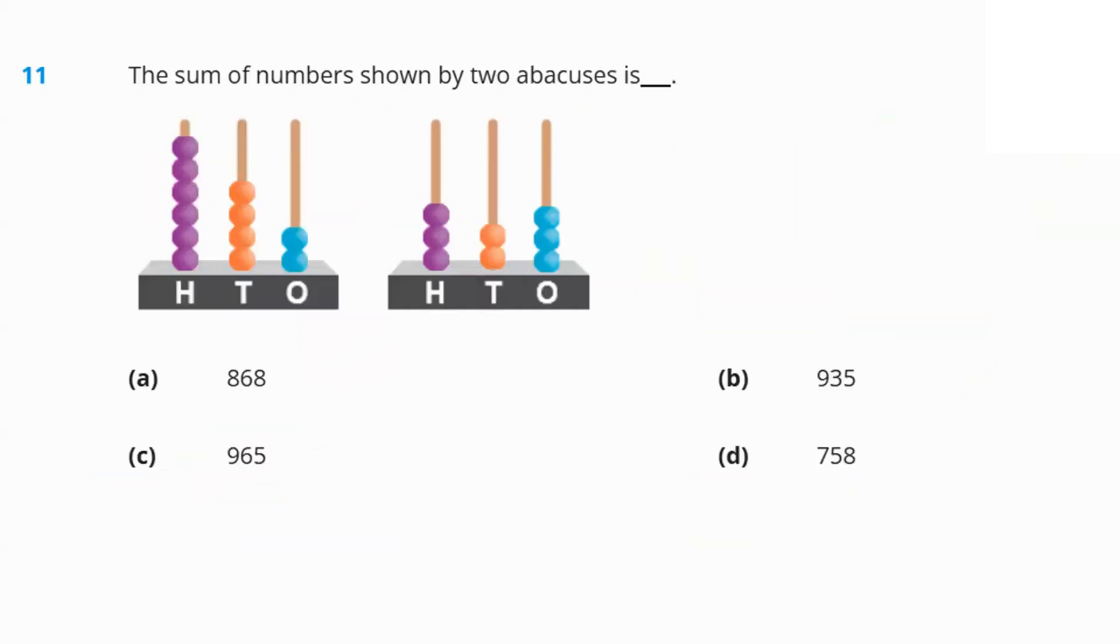Question number 11. Find the sum of the two numbers shown on both the abacuses. One, two, three, four, five, and six. Six hundred forty-two. Plus, six hundred and forty-two plus three hundred and twenty-three. If you add this, three plus two, five. Four plus two, six. Six plus three, nine. Nine hundred and sixty-five. Option C.